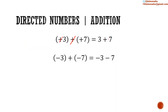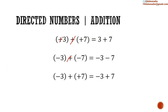Similarly, negative 3 added to negative 7 is written as negative 3 added to negative 7 — so we omit the plus sign. Similarly, negative 3 added to positive 7 is written this way — negative 3 added to positive 7 — with the plus sign being omitted when it means addition. And positive 3 added to negative 7 is written this way.